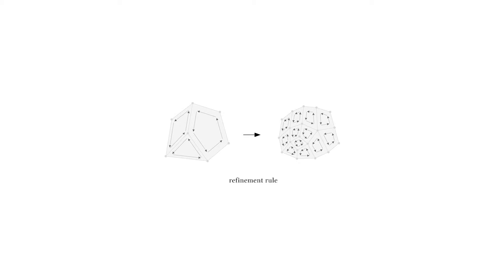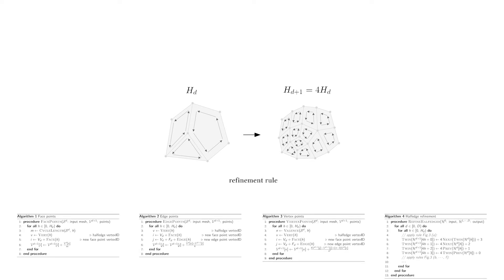We start by making the key observation that the refinement rule multiplies the number of half edges exactly by 4. This is always true, even in the presence of non-quad faces. We leverage this property to re-express the Catmull-Clark refinement rule as the following four parallel iterations over the half edges of the input mesh.